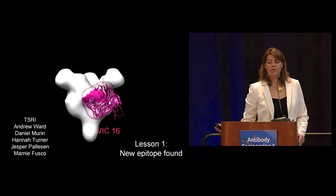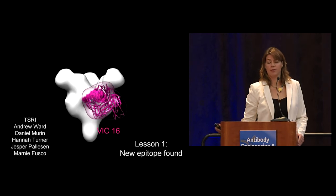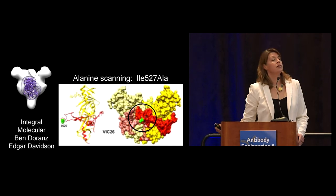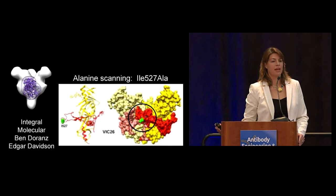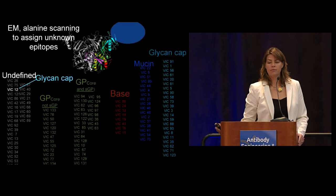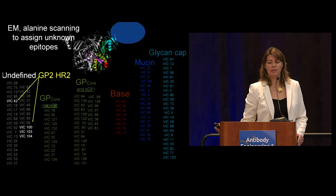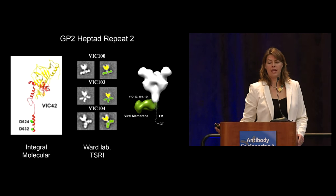Using electron microscopy and alanine scanning to pick apart the unknown epitopes: three turned out to bind the fusion loop — VIC16 binding on the fusion loop with its footprint in hot pink, the first time we've ever seen an anti-fusion-loop antibody from this blinded pool. VIC26 binds the same general area, shifted slightly, and the results map well to alanine scanning from Integral Molecular, where an I527A mutation knocks out VIC26 and it's right in the middle of the EM footprint. VIC12 turned out to bind the glycan cap at a different orientation from anything seen before, and four antibodies were found to bind the second heptad repeat below the GP2 structure.